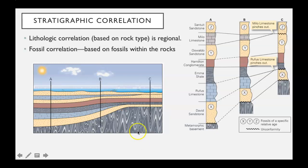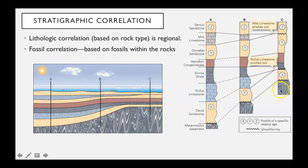Here are some units correlated in a similar basin. Here's more of the shelf area; B is out on the rise or slope, and A is more like the rise or out into the abyss of the basin. We have relatively thin units near the shoreline, going deeper out here, and then thicker units out to the west.